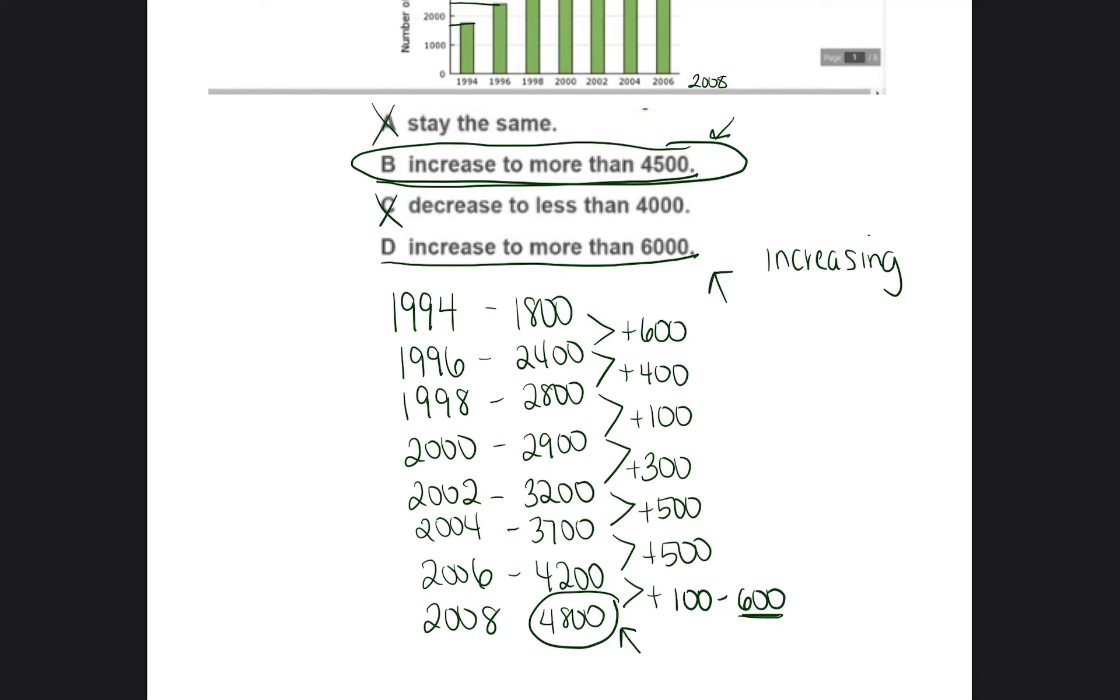The other reason why we didn't choose D is because in order for it to increase to more than 6,000, that means in order to go from 4,200 to 6,000, it would have to increase so much more than it's ever increased in the past. So we know that this is just too large of an estimate for that to be correct. So we are going to stick with our answer B. It's going to increase to more than 4,500.